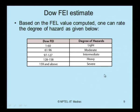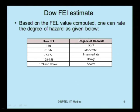Based on the FEI value, the degree of hazard can be classified from the table. If the FEI lies between 1 and 60, the degree of hazard from the fire and explosion index is classified as light. If it is greater than 159, it is considered severe.